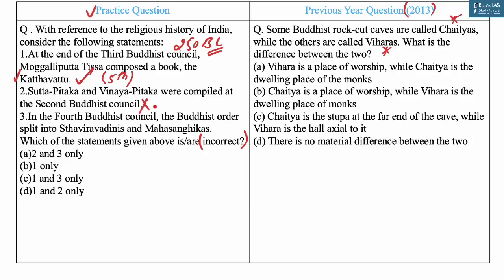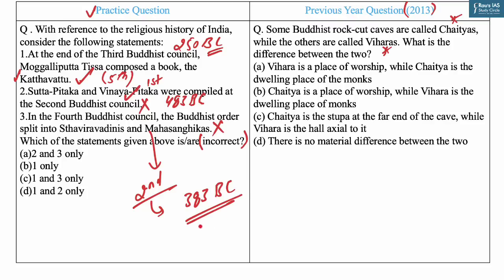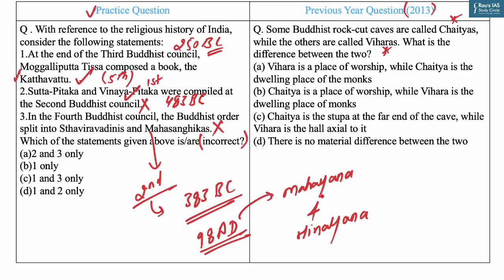The first Buddhist council in 483 BC resulted in compilation of the Vinaya Pitaka (rules of Buddhist order, recited by Upali) and the Sutta Pitaka (Buddha's sermons on doctrine and ethics, recited by Ananda). Both were compiled at the first council, not the second. Statement three says the Buddhist order split into Sthaviravadins and Mahasangikas at the fourth council — this is also incorrect. That split occurred at the second Buddhist council in 383 BC. The fourth council in 98 AD resulted in the division into Mahayana and Hinayana.